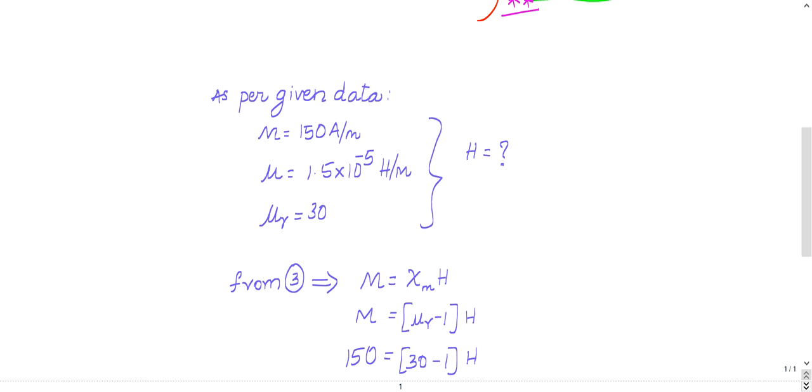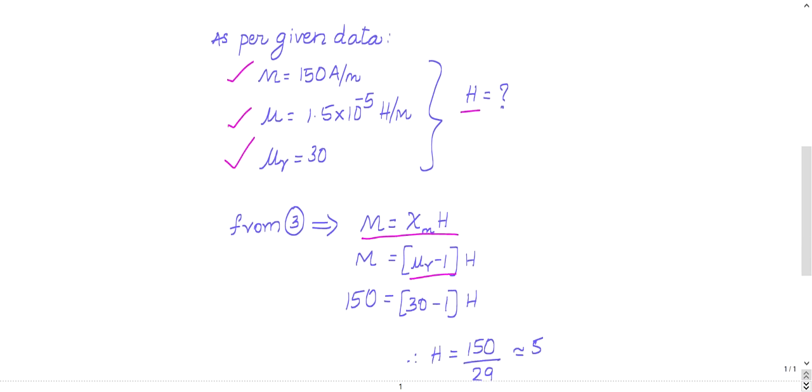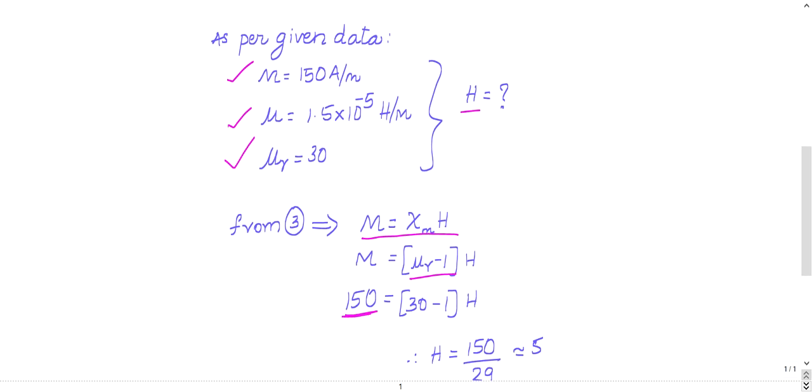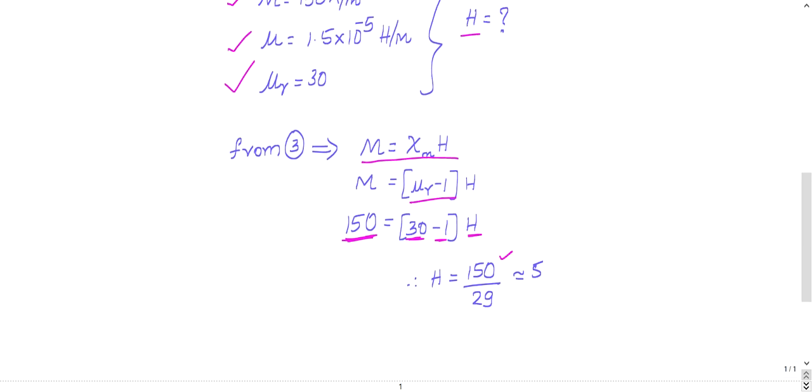In the question, M is given, μ is given, μᵣ is given. Now what is asking? H. Very simple. You know the relationship: M is nothing but χₘ into H. What is χₘ? μᵣ minus 1. What is μᵣ given? 30. M is given 150. Substitute: 150 equals (30 minus 1) into H. So 150 by 29, it's like 150 by 30 approximately, right? So it's like 5.